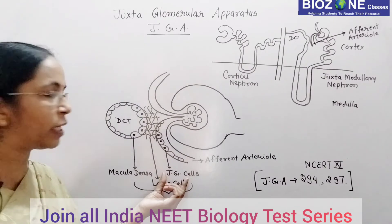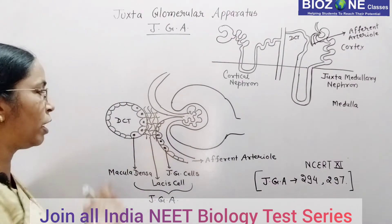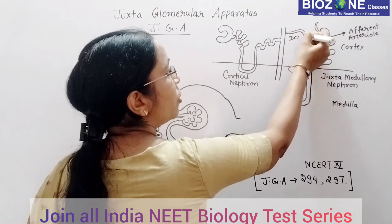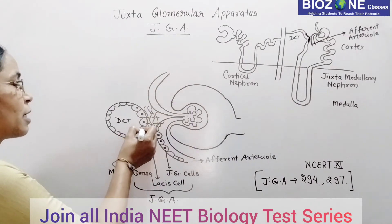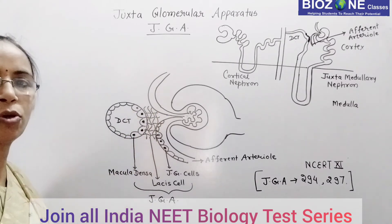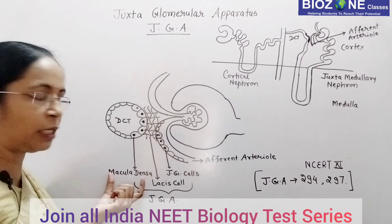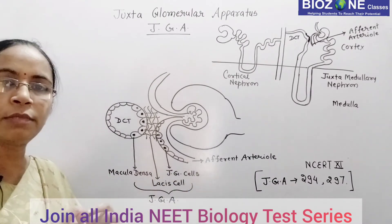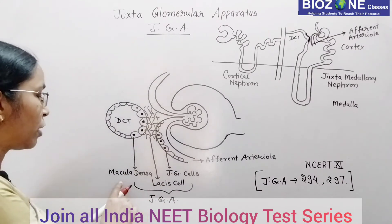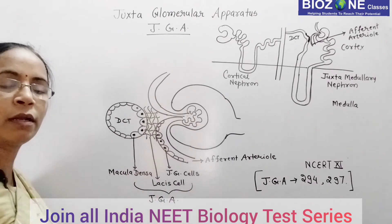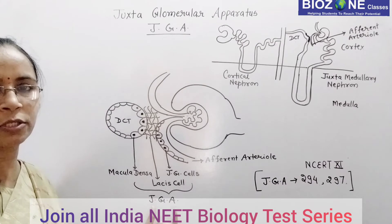So, JG cells are some of the differentiated cells of the afferent arterioles. The part of DCT which comes in contact with the afferent arterioles also has some cells that differentiate, and these differentiated cells of the DCT are called macula densa. In between the macula densa of the DCT and the JG cells of the afferent arterioles, some special cells are present, called lacis cells. Combined — macula densa, lacis cells, and JG cells — all three cells are responsible for the formation of the JG apparatus, or JGA.